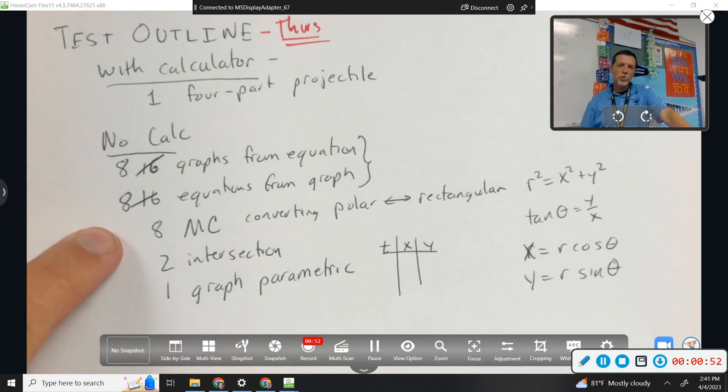Eight multiple choice. I'll just back up. Eight graphs from equations, it's like I give you the equation, you do the graph. And then eight, I give you the equation. No, I give you the graph, you give me the equation. These are just like the last couple of worksheets, right, where the front half is you do the graph and the back half is you do the equation, just like that.